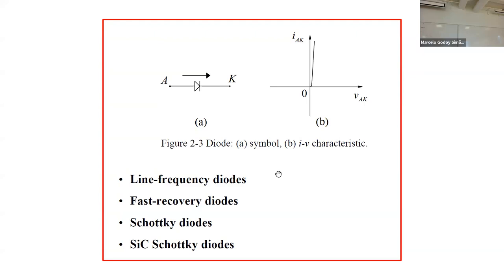Schottky diodes are useful for low-voltage applications like smartphone chargers where you want a very low voltage drop. Silicon carbide is a new material for diodes and transistors.